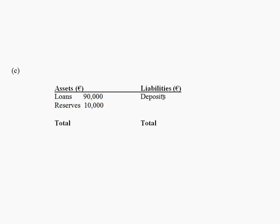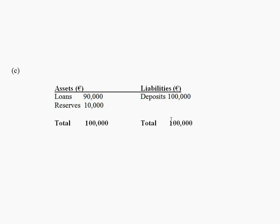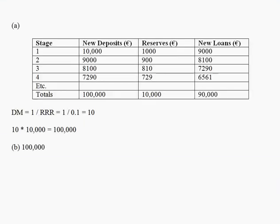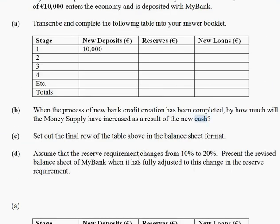The total of the savings column is 100,000 euros. When you total up both columns, both should give you the same total — in this case, 100,000 euros.